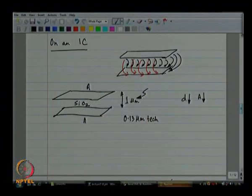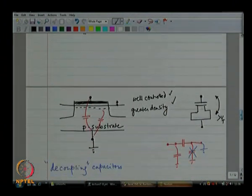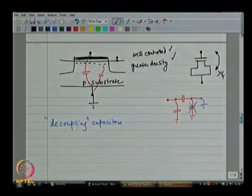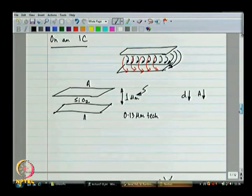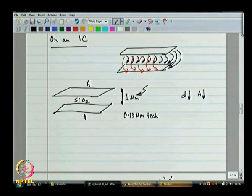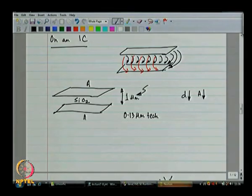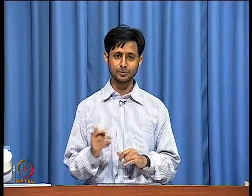On an IC, how do I make a capacitor? I can take two metal layers and build a capacitor between them. But the separation between these two metal layers is quite significant, which means I do not get very good capacitance density. I usually burn up a lot of area to make a small capacitor.